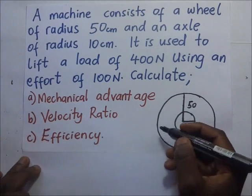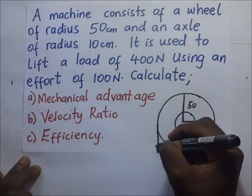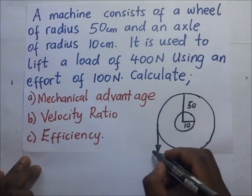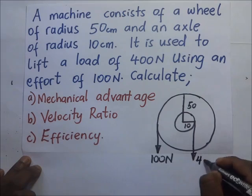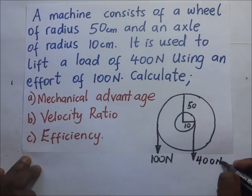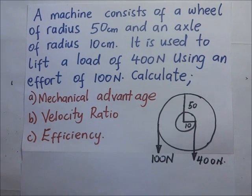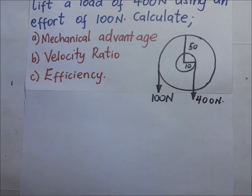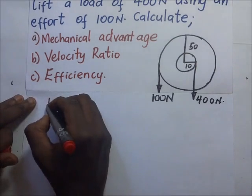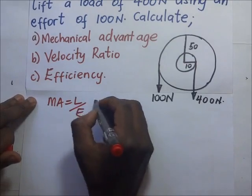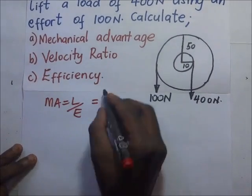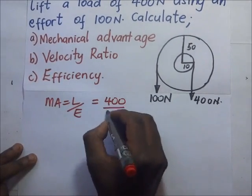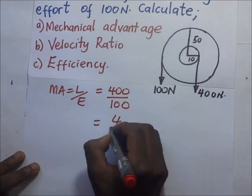The effort of 100 newtons is applied on the big wheel, and the load is 400 newtons on the axle. The mechanical advantage equals load over effort, which is 400 divided by 100, giving a mechanical advantage of 4.